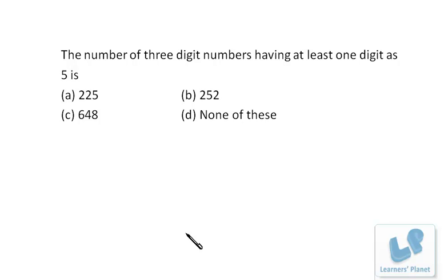So I take a reverse approach. What I do, I take all the three digit numbers and from that I would deduct the numbers in which there is no five at all. So in the remaining numbers, there would be at least one five because the calculation of one fives, two fives and all three fives will be a bit difficult or a bit lengthier. So I take a reverse approach.